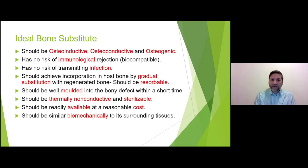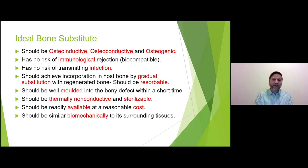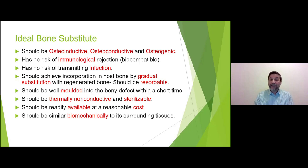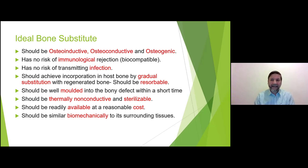What is the ideal bone substitute? It should be osteoinductive, osteoconductive, and osteogenic. It must have no immunological rejection risk, or at least the least possible risk. It must have a very low or ideally no risk of transmitting infection. It should achieve incorporation by gradual substitution — meaning slowly the bone will take over and fill the whole gap completely, and the material should resolve.